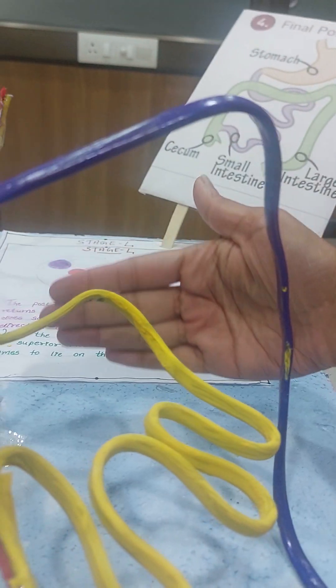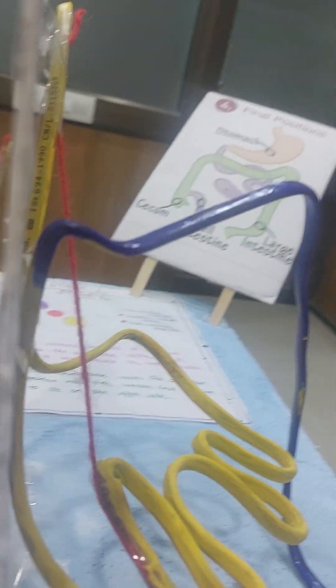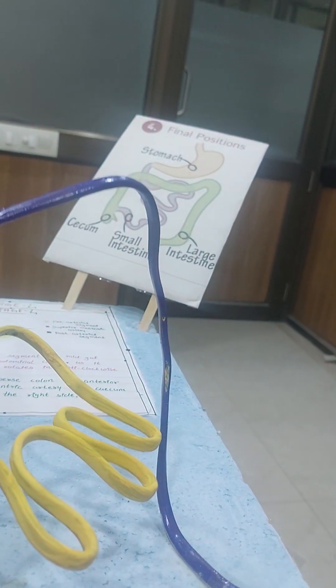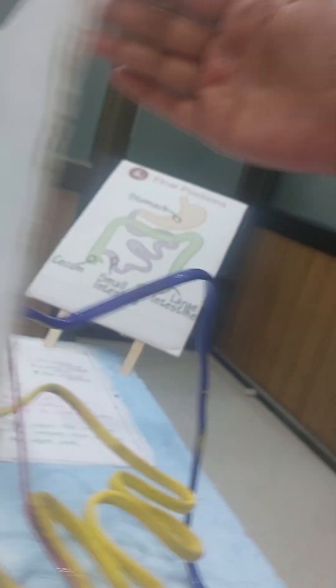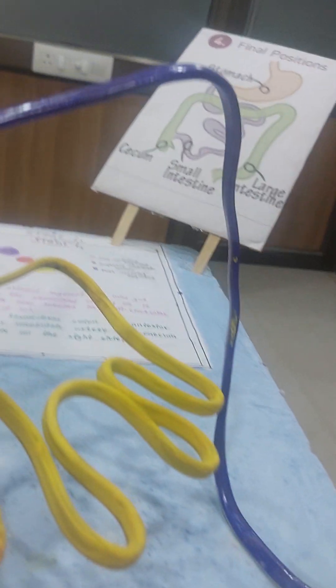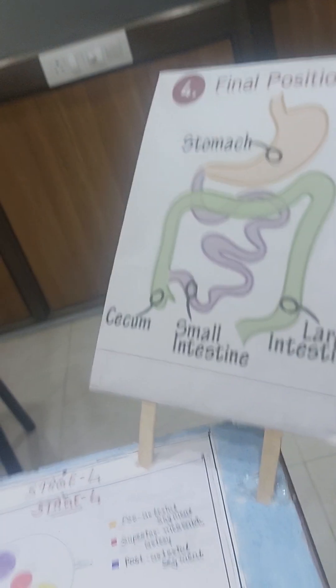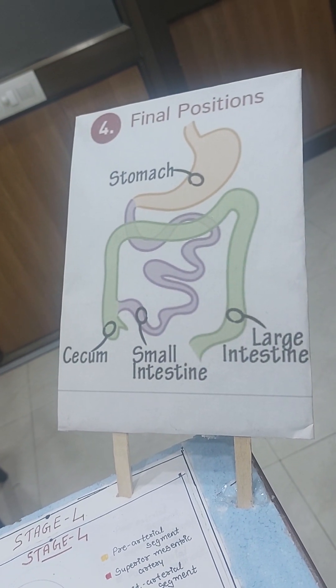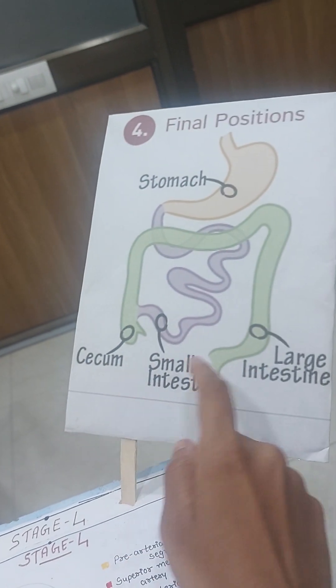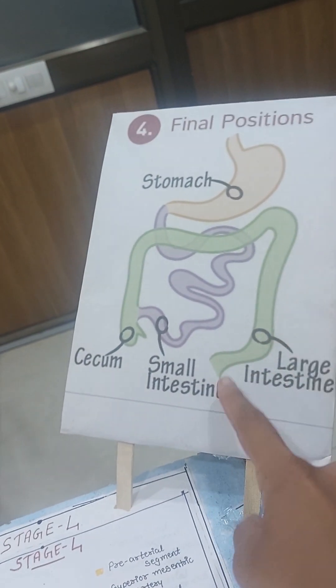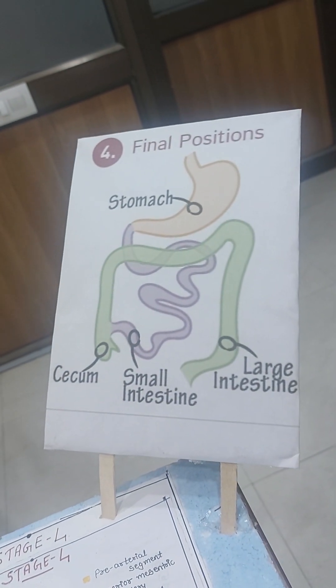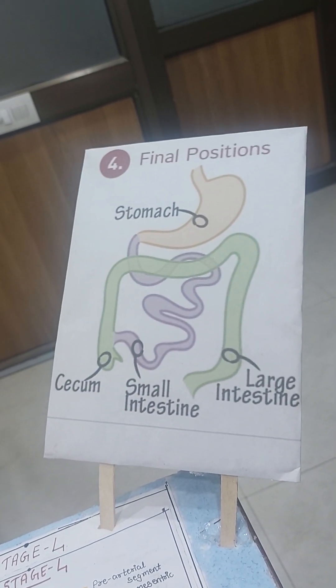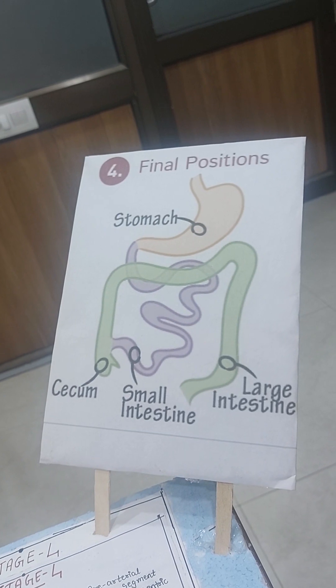If we consider this as the abdominal cavity, this would be your right and left and the posterior abdominal wall. In the final stage, they all come back into the main position. That is, the cecum to the right and the large intestine, that is, the rectum and cecum and colon to the left. This was all about the mid-gut rotation.